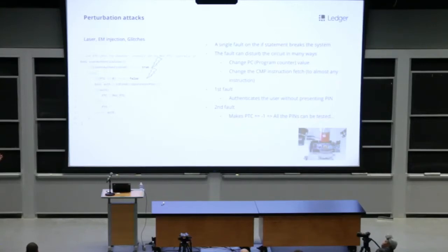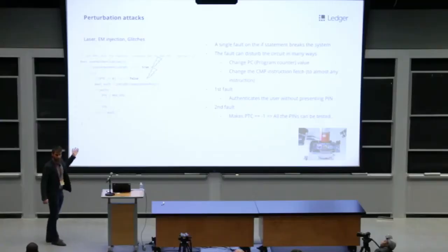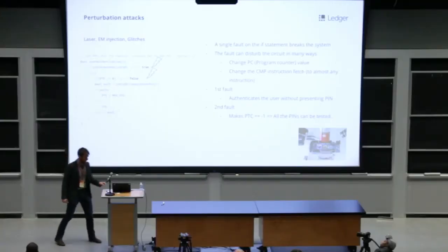And the second if is quite funny. When the attacker skips this comparison, the PIN trial counter will be updated to minus one. And then they will be able to try as many PINs as they want, because minus one, minus two, minus three, it's never zero. So it can break the system. That's why it's a bad way to implement the PIN verification.